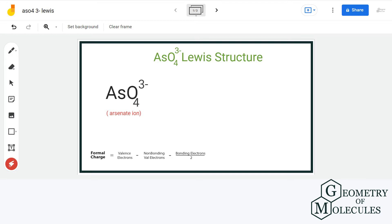Hello guys, welcome back to our channel. In this video, we are going to help you to determine the Lewis structure of AsO4 3 minus ion. It's a chemical formula of arsenate ion.